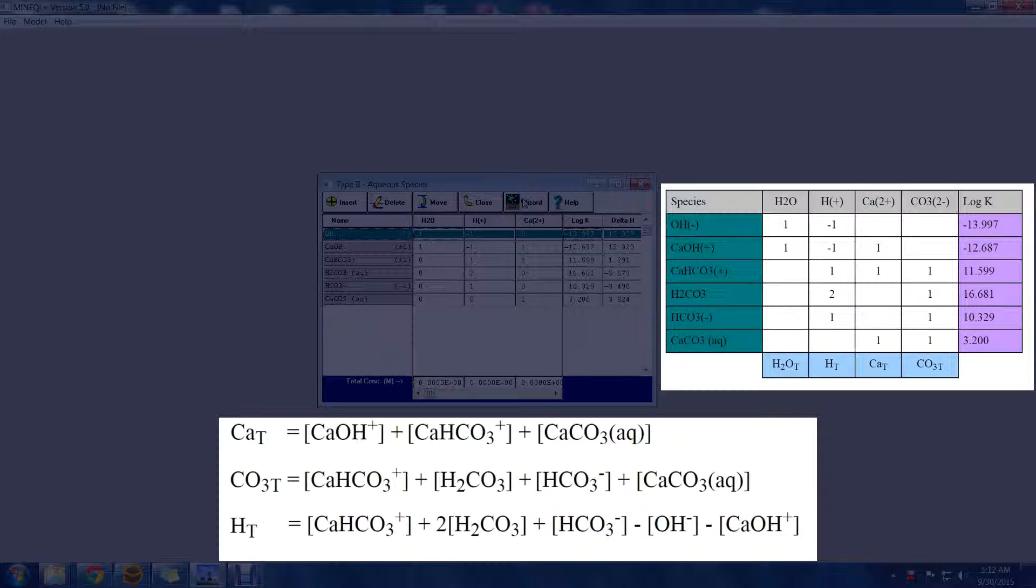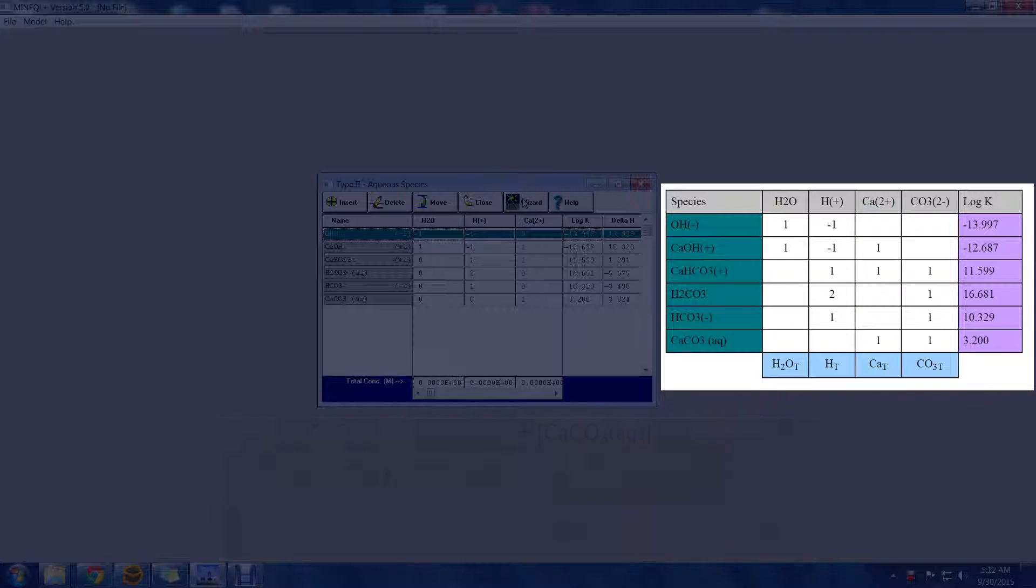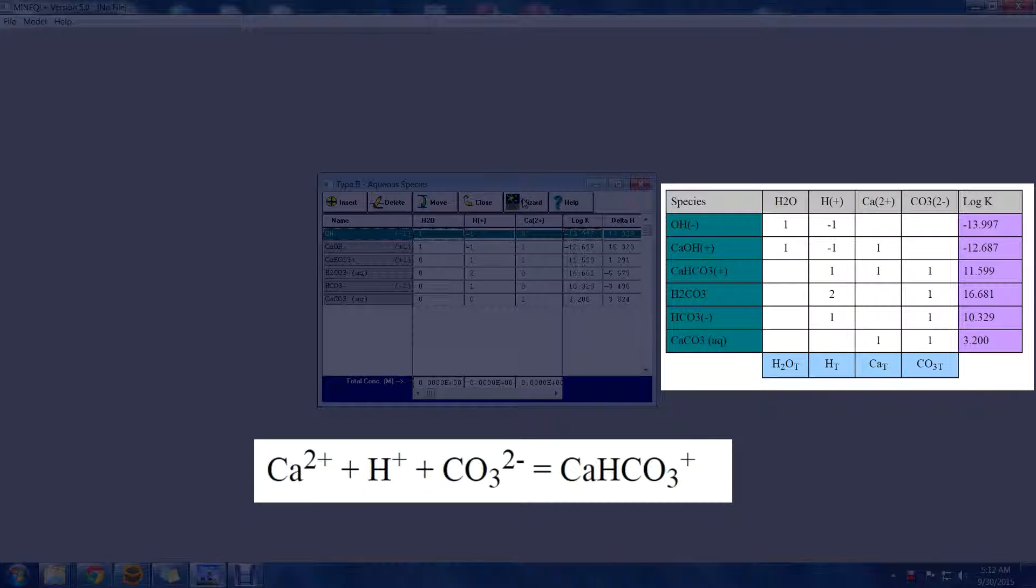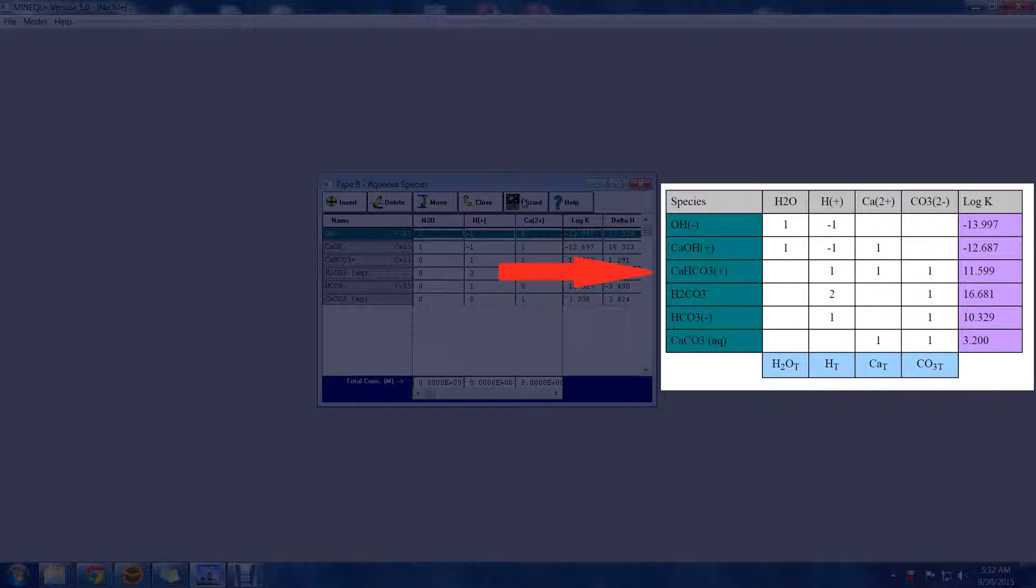Each of the chemical species can be written in terms of their components. For example, calcium plus proton plus carbonate yields calcium bicarbonate. In the tableau, each row corresponds to the reaction equation for a given species.